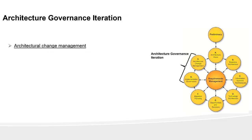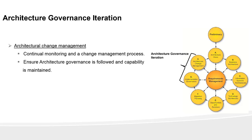Architecture change management provides a continual monitoring and change management process to ensure that the architecture responds to the needs of the enterprise and maximizes the value of architecture to the business. This monitoring is usually done with the help of software tools. In this phase you need to ensure that architecture governance is being followed and architecture capability is maintained.